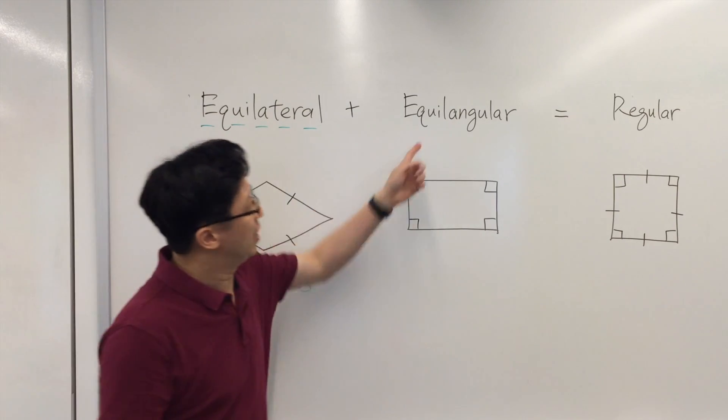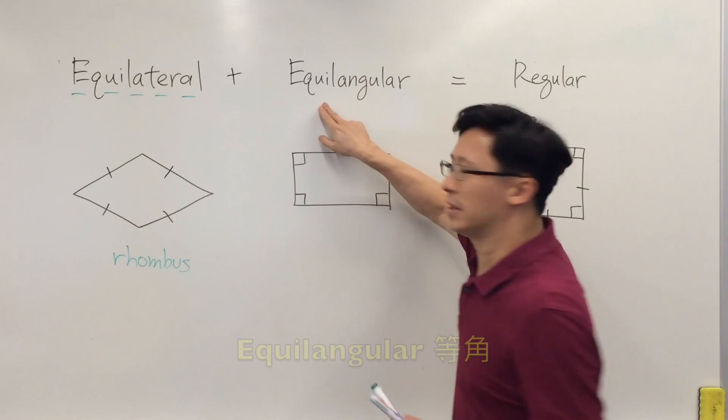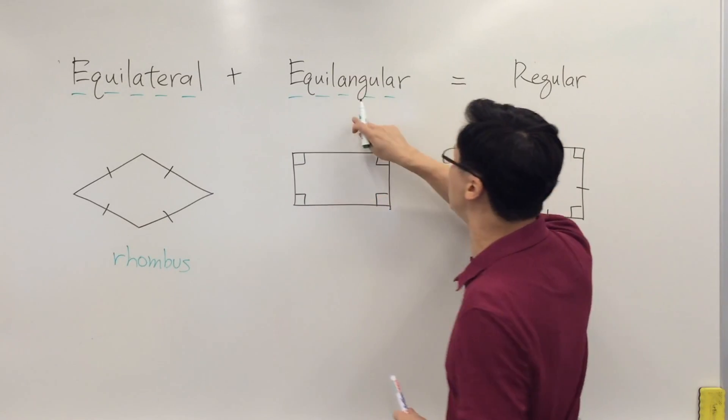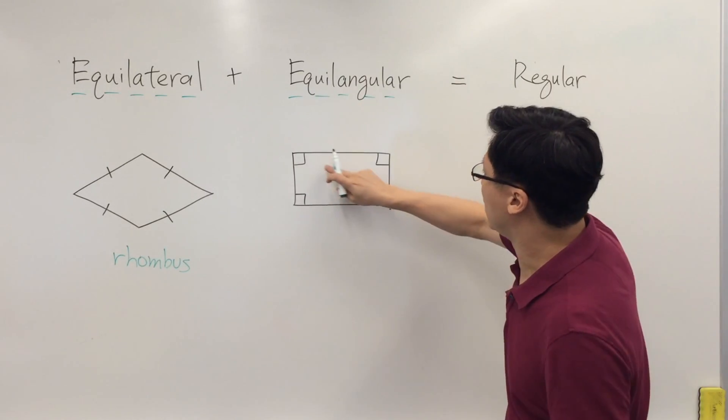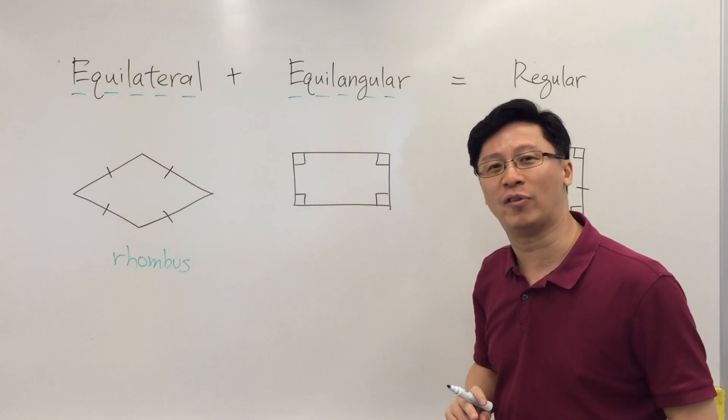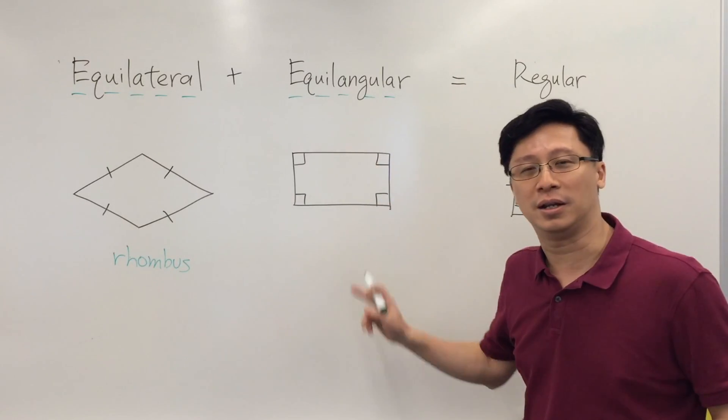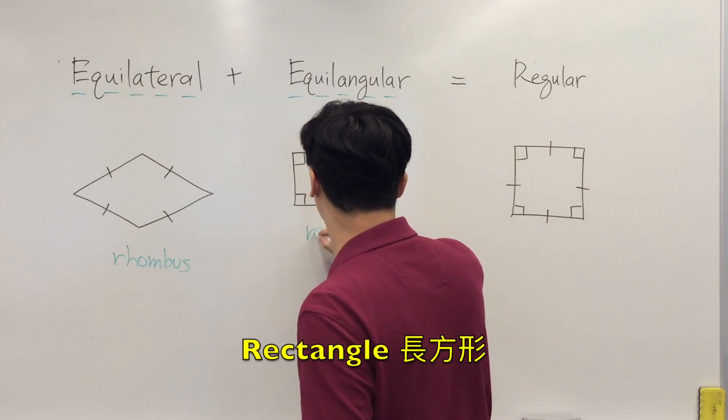And the next one will be equilangular. Equilangular means all the angles are equal. If this is a quadrilateral with four equal angles - one, two, three, four - and actually this is a rectangle. We call this a rectangle, a quadrilateral with four equal angles.